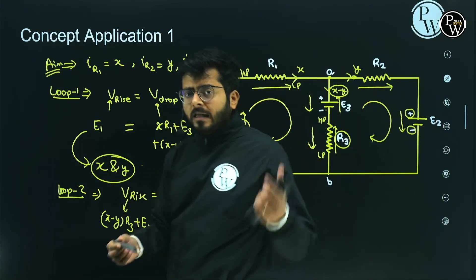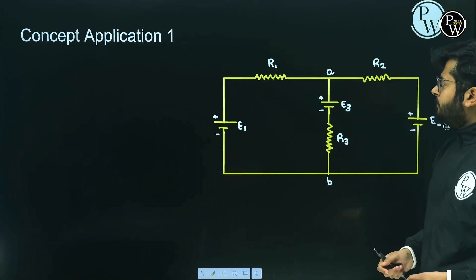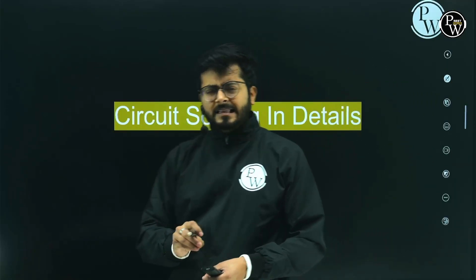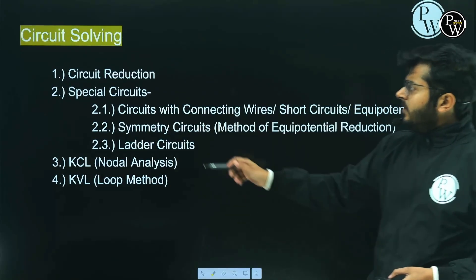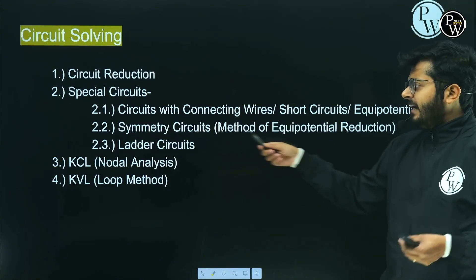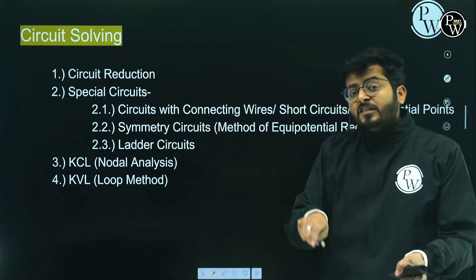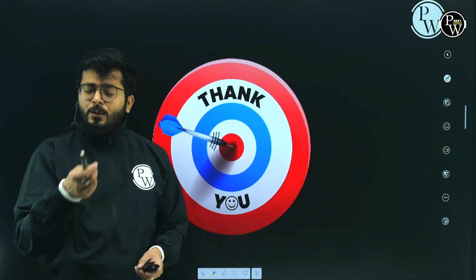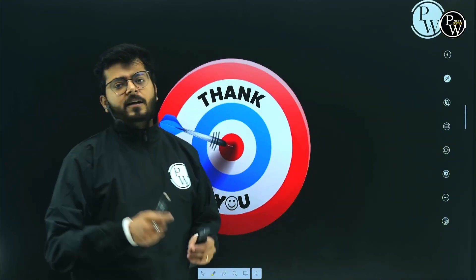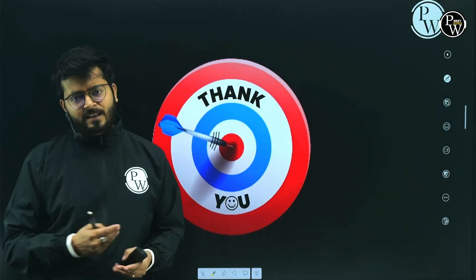By looking into these two loops and applying a simple law, we can find values in this situation. There are many more complicated circuits — special connecting wire circuits, ladder problems, infinite circuits — and KCL and KVL will have multiple circuit problems as well. To practice all that, you can go through the one-shot I have prepared along with a DPP on the channel PW NEET English, where detailed circuit problem solving is covered.